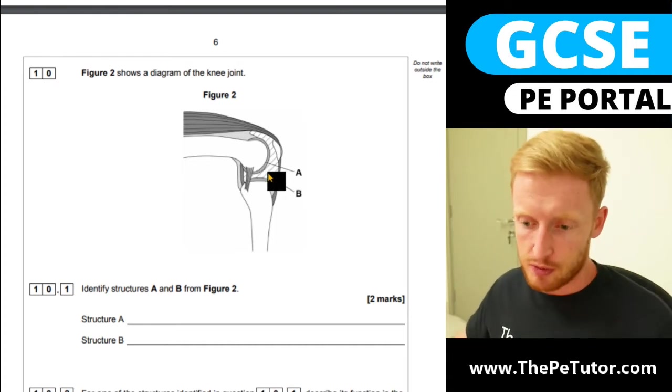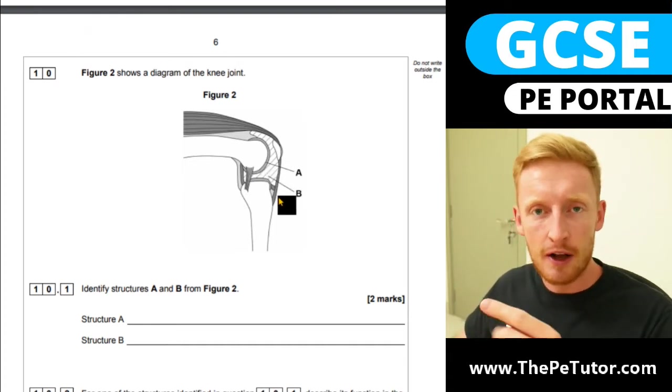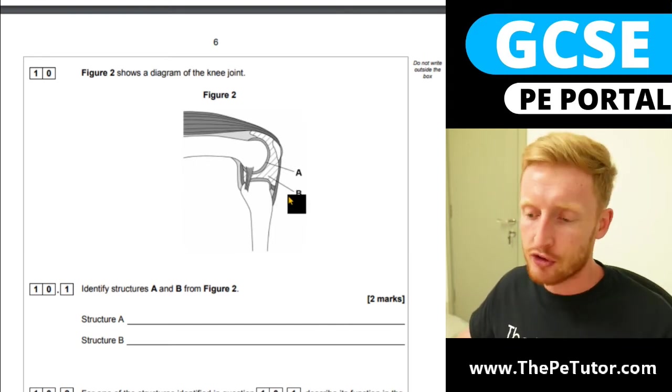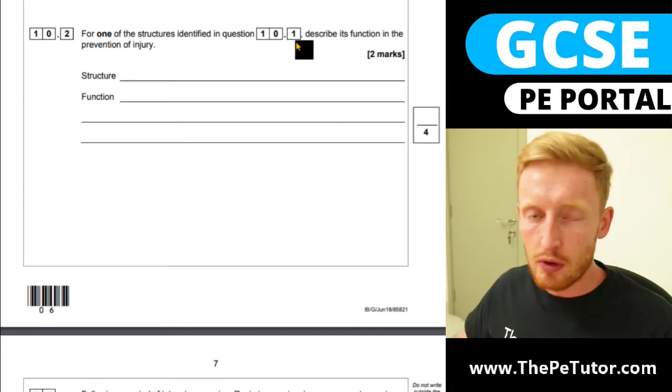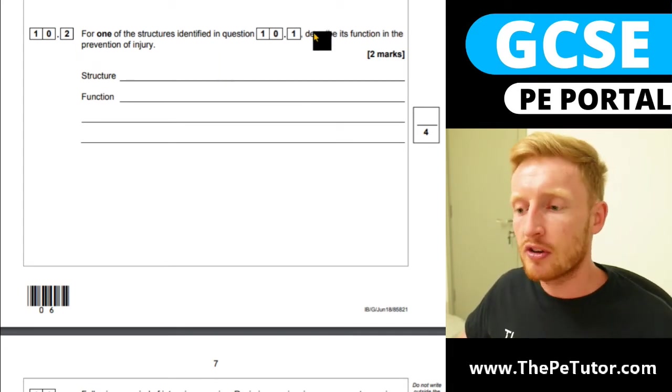So what that question was talking about was labeling the synovial joint. That's what you need to be able to do is just label the structures, but this follow-up question then asks you to not only identify the structure but also to describe its function.